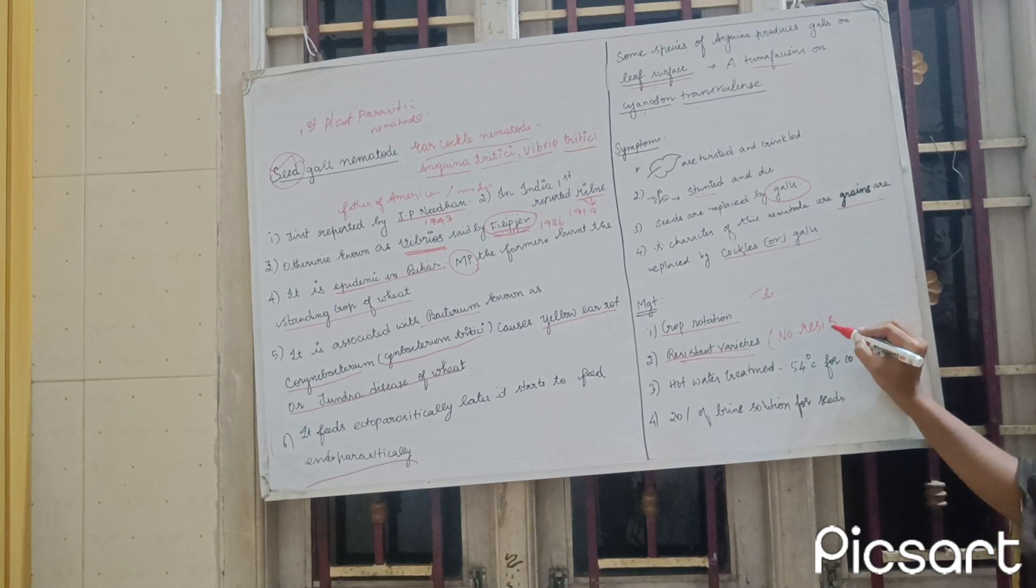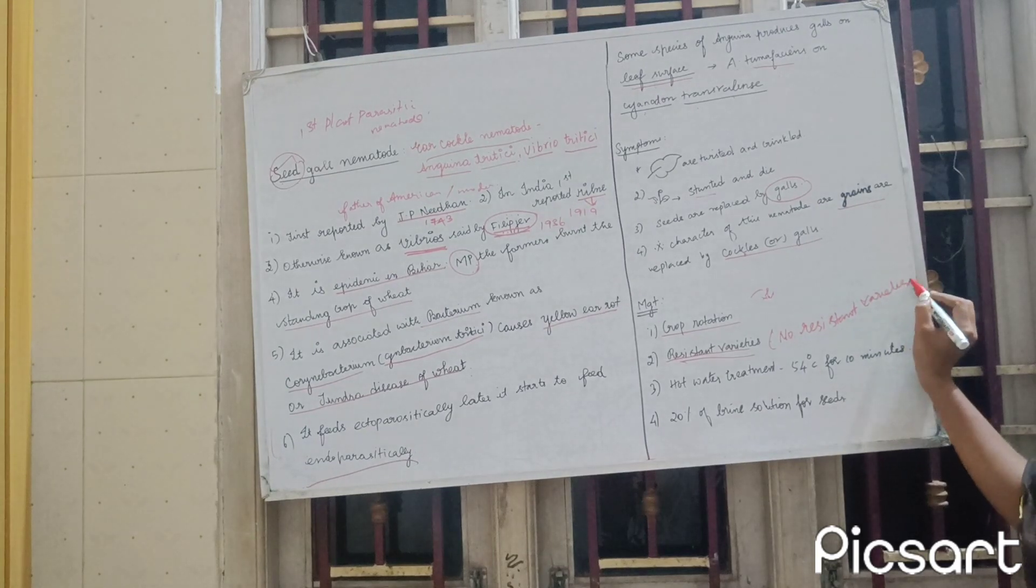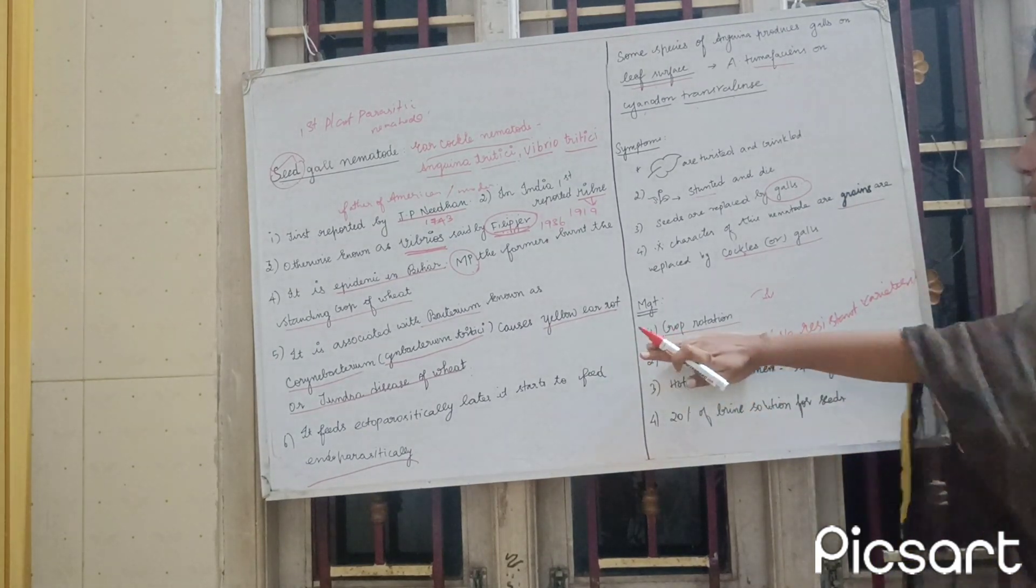No resistant varieties found for seed gall. Hot water treatment - 54 degree Celsius for 10 minutes.